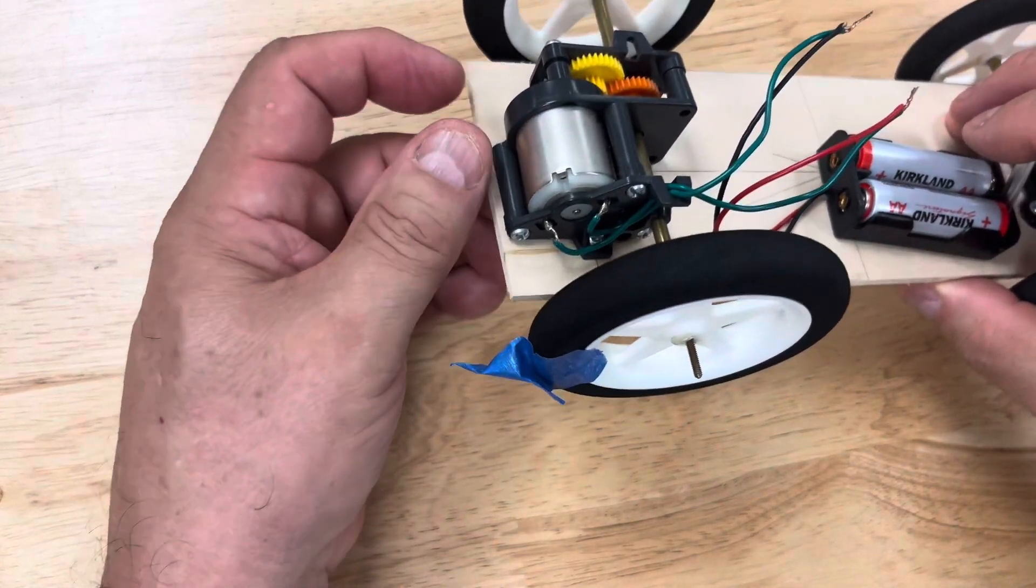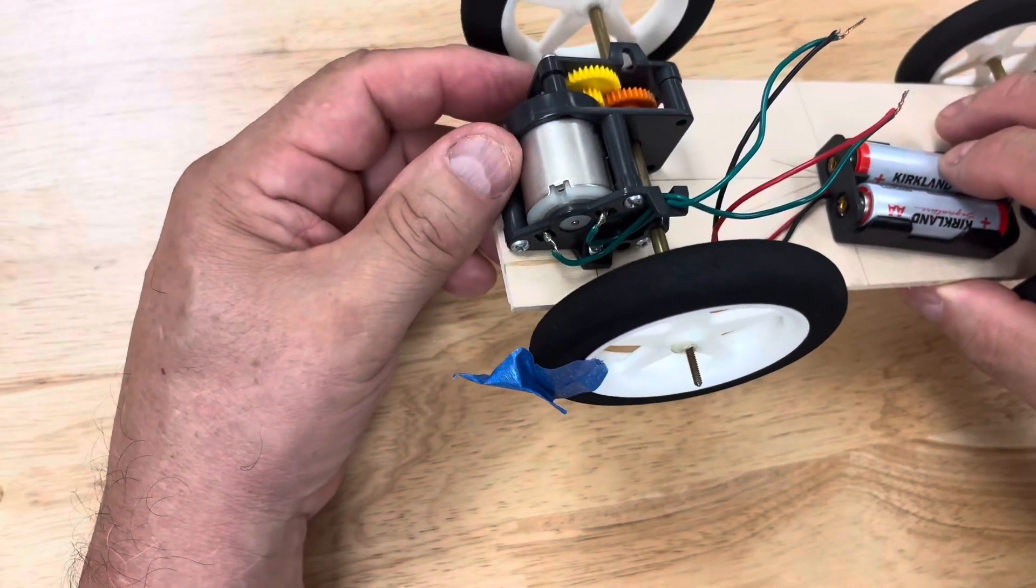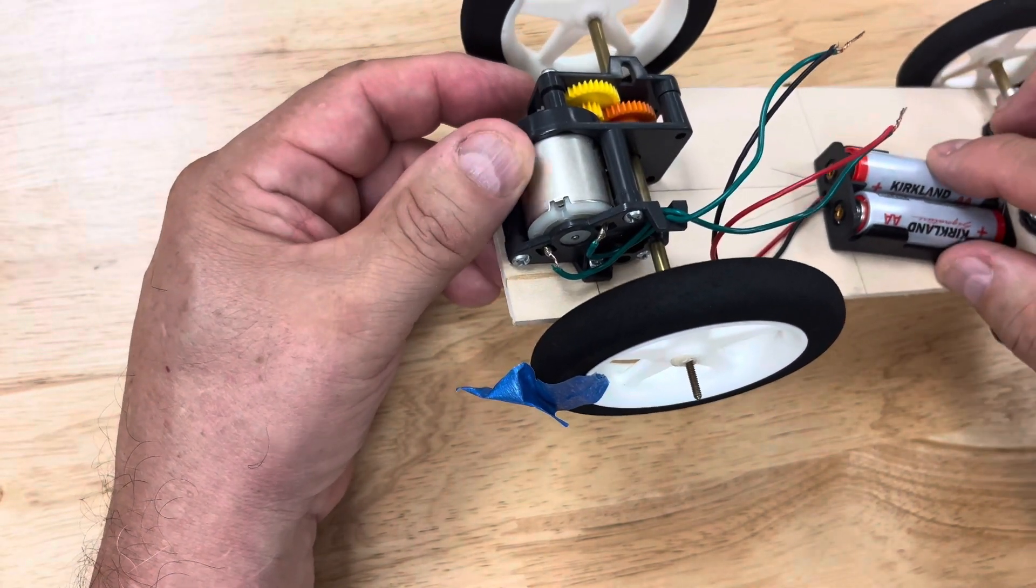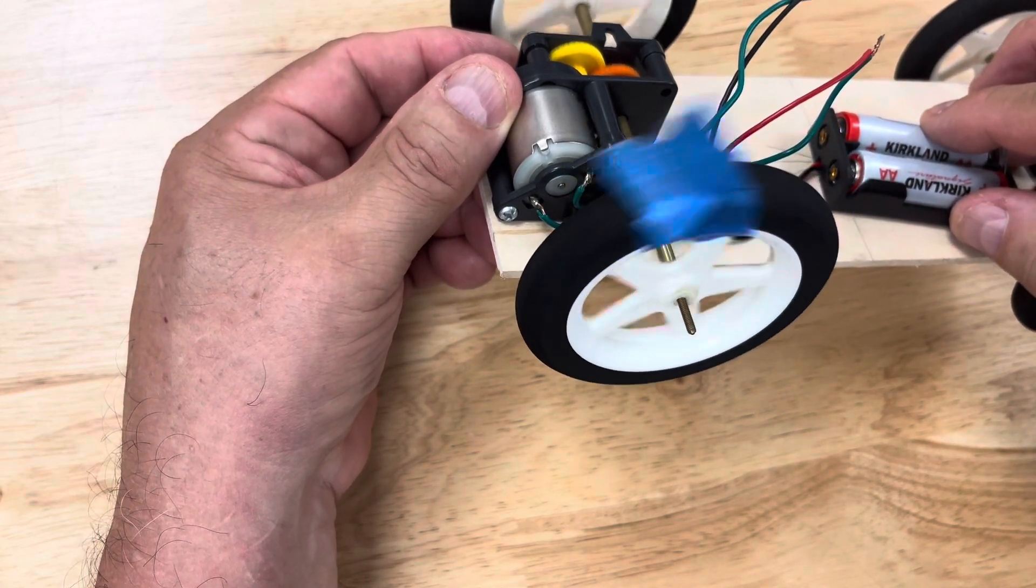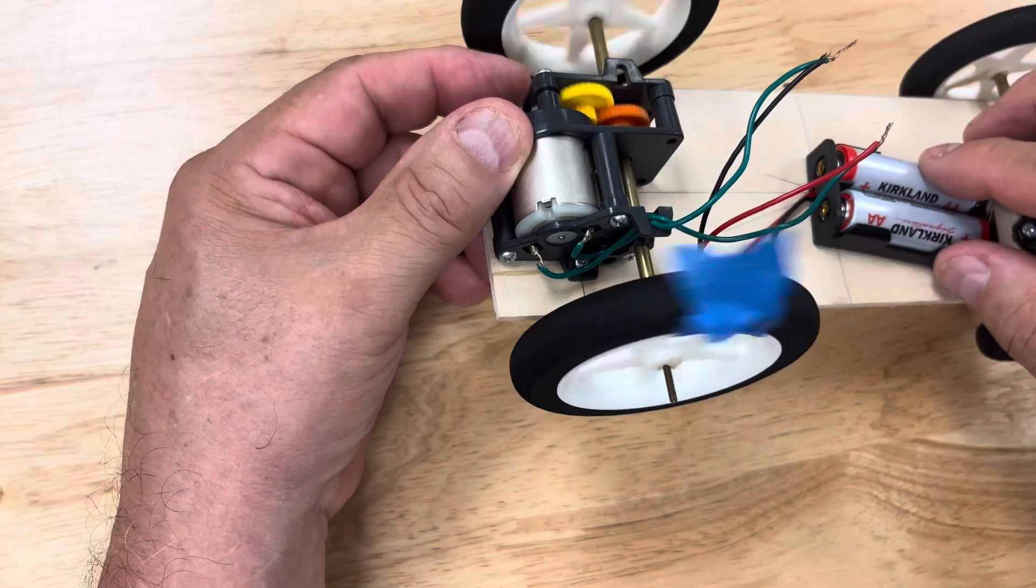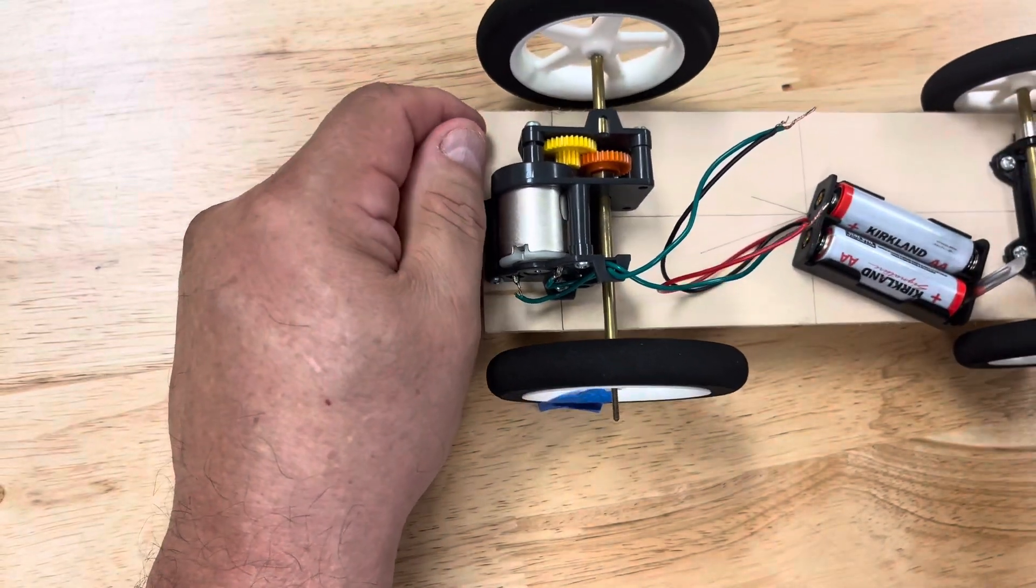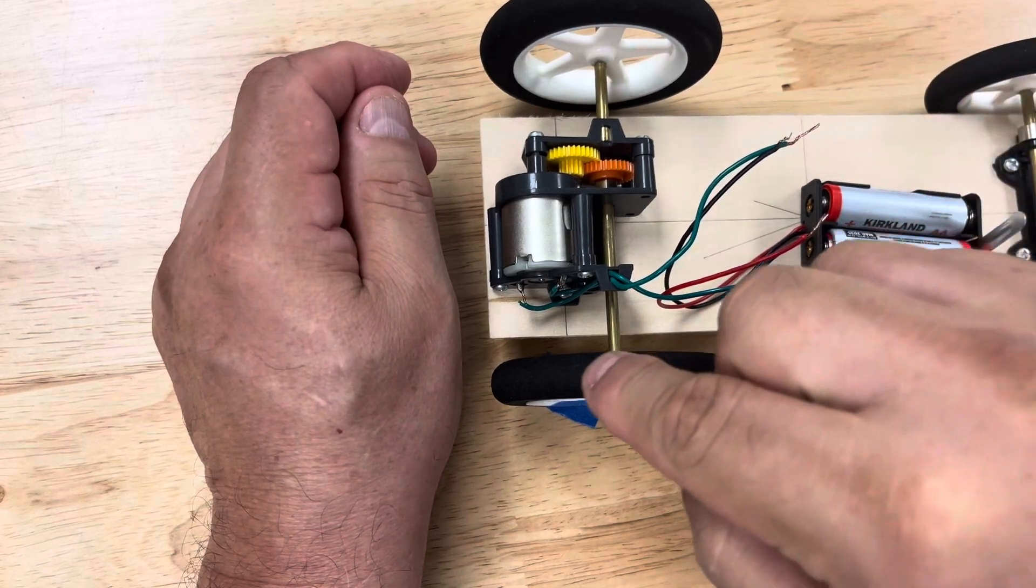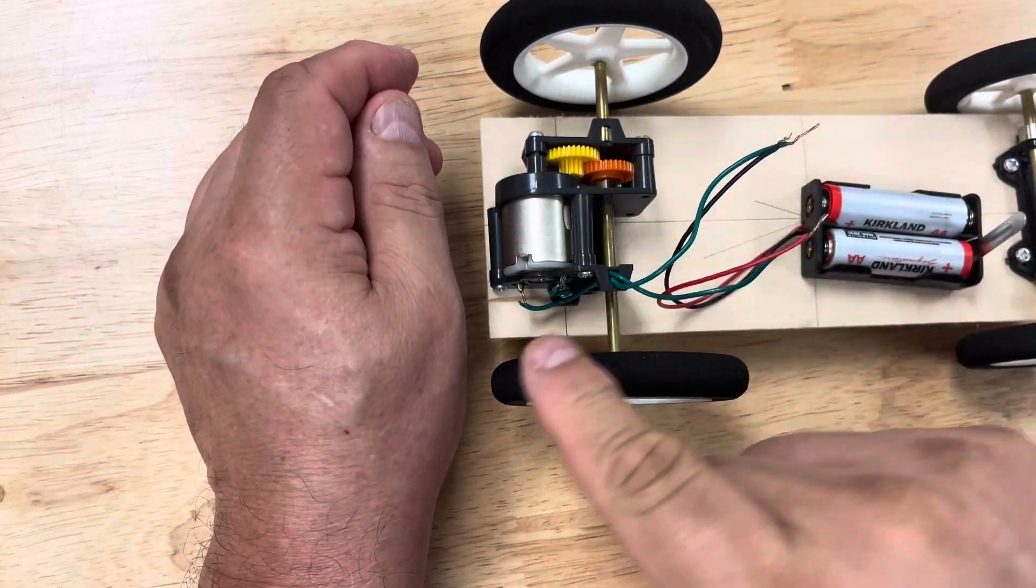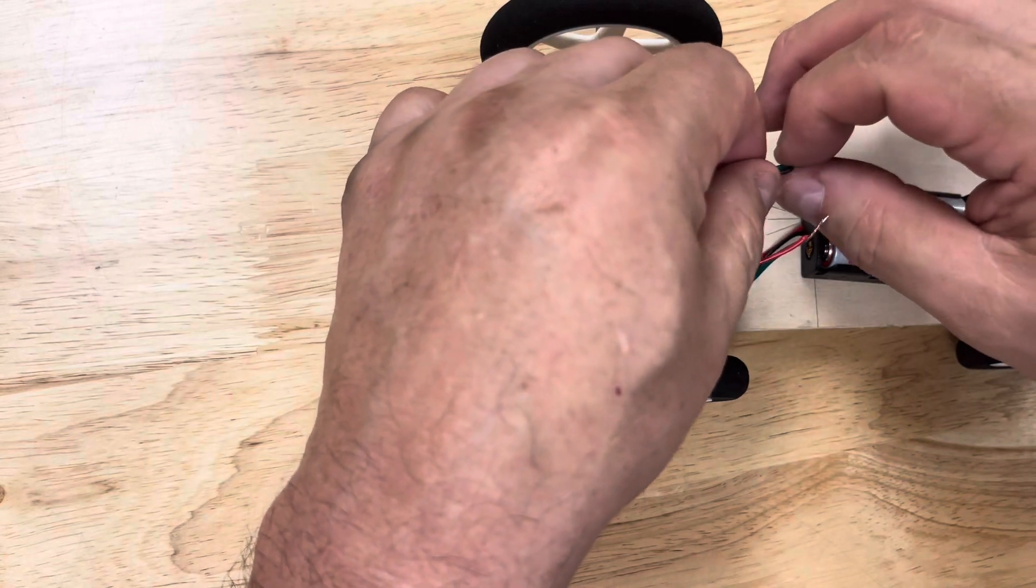So, now I have the wires turned around, and let's see what happens with our wheel. As you can see, it is going the opposite direction. It's going backwards now. This is what we call reverse polarity, meaning that the electricity has taken a different route. It's actually going backwards, and it's causing that motor to spin the opposite way.